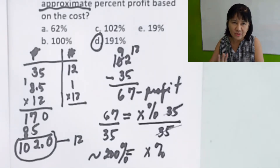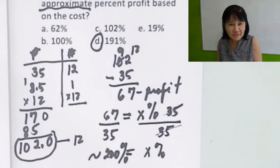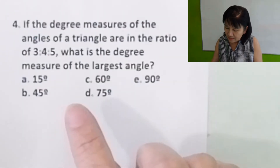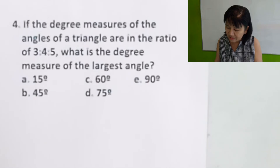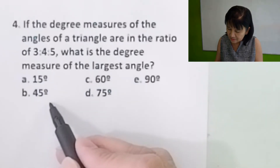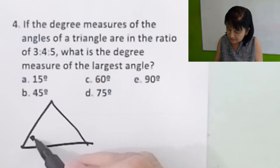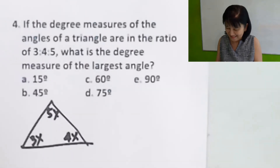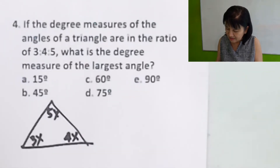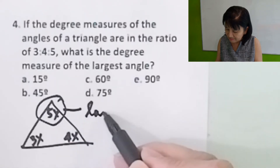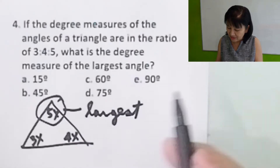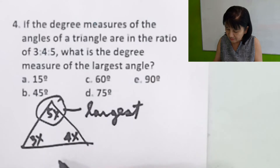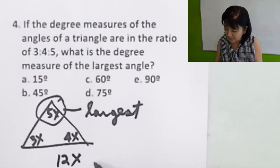Problem number 4: If the degree measures of the angles of a triangle are in the ratio of 3 to 4 to 5, let the angles be 3x, 4x, and 5x. What is the degree measure of the largest angle? The largest is 5x. Add them all: 3x plus 4x plus 5x equals 12x equals 180.